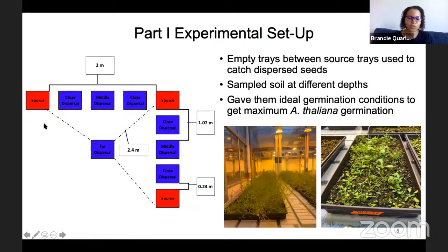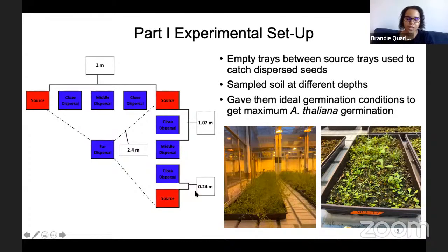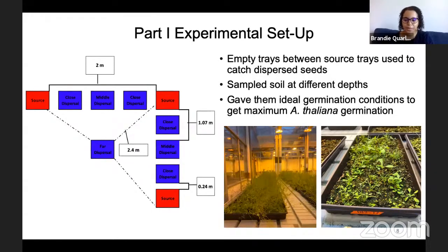In between these experimental source populations for the global experiment, I placed dispersal populations at different distances — basically just trays with soil and nothing else to catch dispersed seeds. I had close ones that were 0.24 meters away from a source tray, middle ones 1.07 meters away, and far trays that were about two and a half meters away. I let them sit out for one dispersal season, then brought them into the greenhouse, sampled soil at different depths to get as many seeds as possible, and gave them ideal germination conditions. This schematic is represented four times in the field.